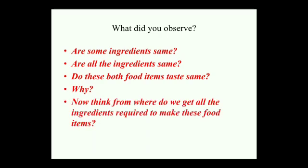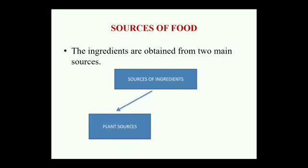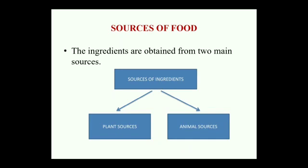The last question which arises in our minds is: where do we get all these ingredients required to make these food items? When I talk about the sources of my food, I talk about the sources of my ingredients. My mother buys these ingredients from the market, but from where does the shopkeeper get these ingredients? I can say that the ingredients are obtained basically from two main sources from nature. The first source being the plant source and the second source being the animal source. Now let us learn in detail about the plant sources and the animal sources.